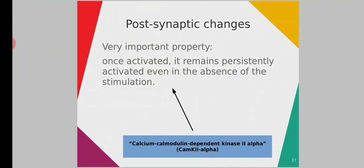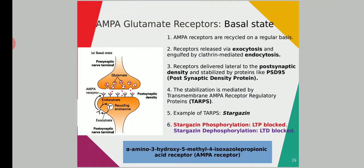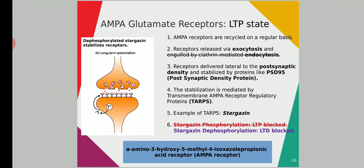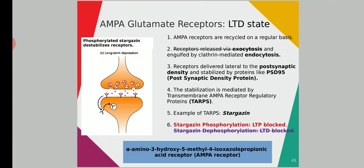The calcium ions activate CaMKII alpha, and CaMKII alpha activates glutamate receptors. Among glutamate receptors, AMPA plays the role in memory because it receives the glutamate neurotransmitter — the memory neurotransmitter. There is also stargazin, which can be phosphorylated or dephosphorylated. If stargazin is dephosphorylated, it increases the number of receptors; when stargazin is phosphorylated, the number of receptors decreases.